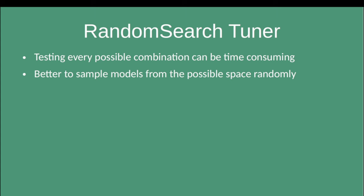Using these helper methods, you can define the search space of different model configurations. As you can imagine, this space might become very large rather quickly. Imagine using just two of these methods — choice and float — and defining 100 different choices and 100 different float values. That gives 10,000 different combinations to try out. In a large search space, trying every single one might take a very long time, so there are different heuristics to come to a solution more quickly, even if it might be suboptimal.